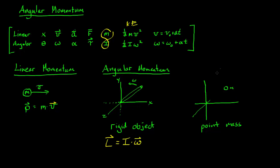A point mass is a little different. For a point mass, we use the linear momentum P and cross it with the displacement vector R. So angular momentum L is defined as R cross linear momentum P. L is a vector so we need a direction. A rigid body is actually just a whole bunch of point masses combined.